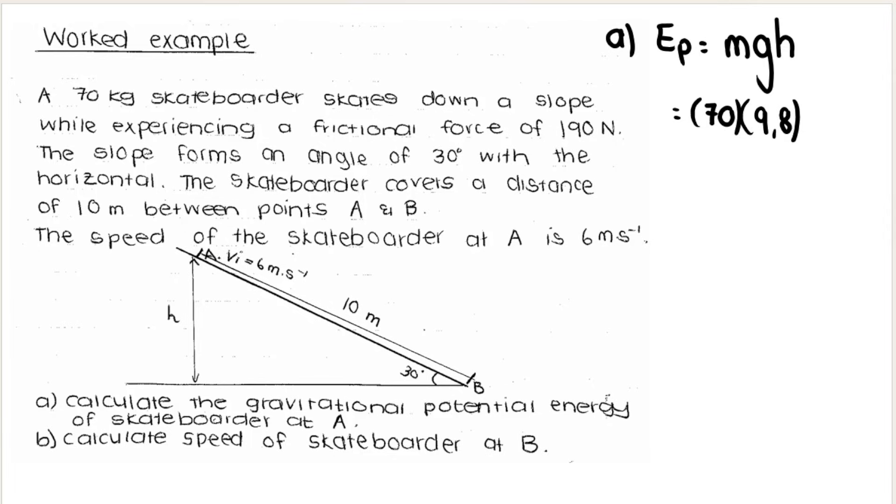Now, remember, to calculate the gravitational potential energy at A. A is up here. I care about the height of A above the ground. This is my height. I do not, for this question, care about how long or how far the skateboarder was skating for. I care about gravitational potential energy, which is height above the ground. How can I find this H? They don't give it to me. So if you think about it quickly, take a look at the diagram. Take a look at what you have.